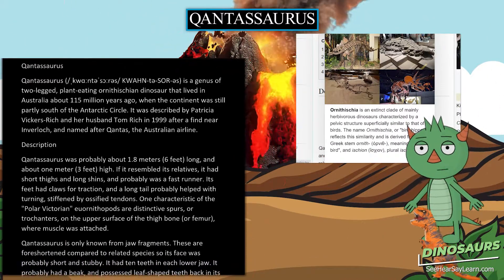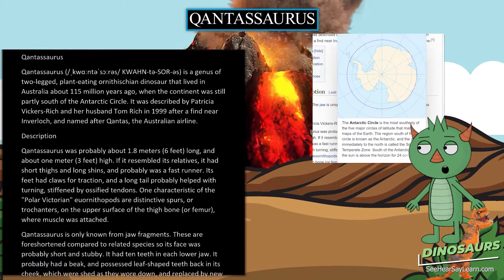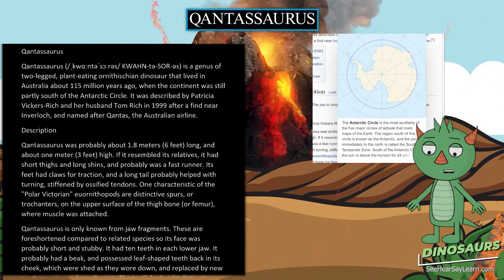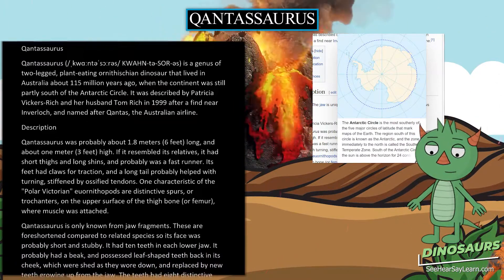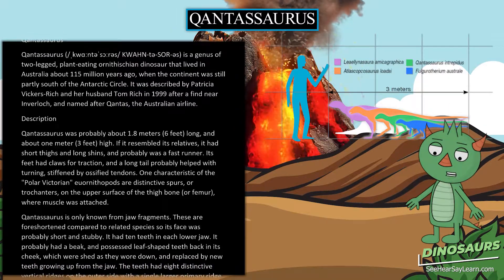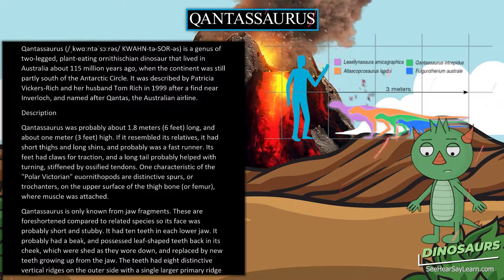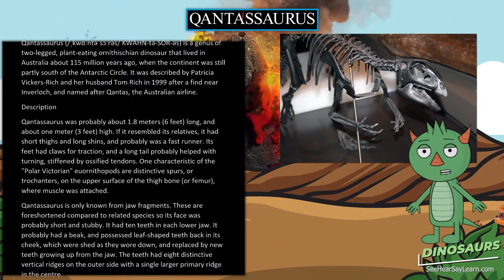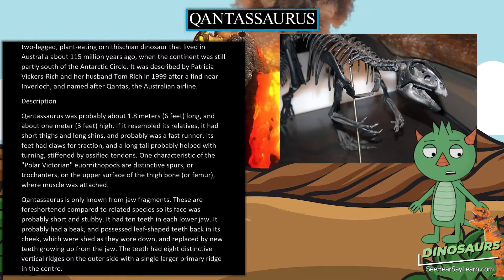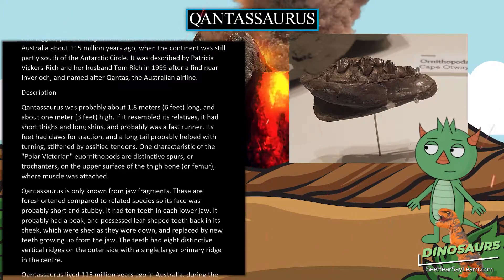Qantasaurus was probably about 1.8 meters long and about 1 meter high. If it resembled its relatives, it had short thighs and long shins, and was probably a fast runner. Its feet had claws for traction, and a long tail probably helped with turning, stiffened by ossified tendons.